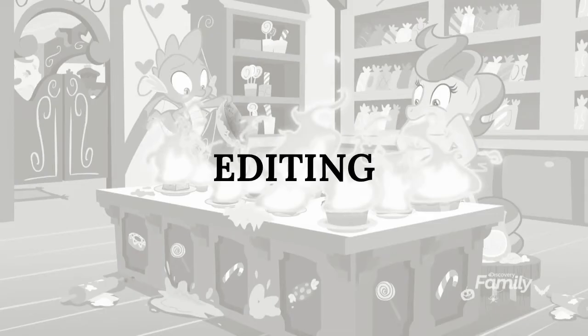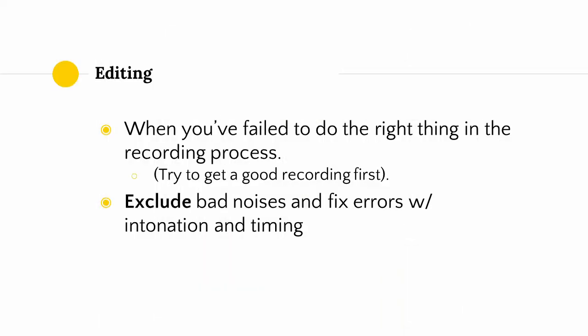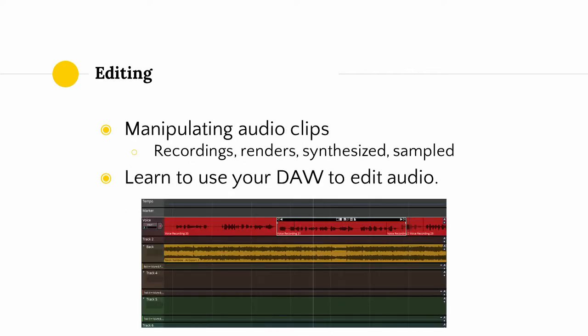Editing is the thing that you do when you fail to do the right thing in the recording process. We use editing to exclude bad noises you failed to exclude from your recording, and fix errors with intonation and timing. When we edit, we are working with units of audio known as audio clips. In most DAWs, audio clips can be moved independently and layered on top of each other. Typically these audio clips are generated by recordings, but they can also be rendered from your project, synthesized, or sampled from other songs.